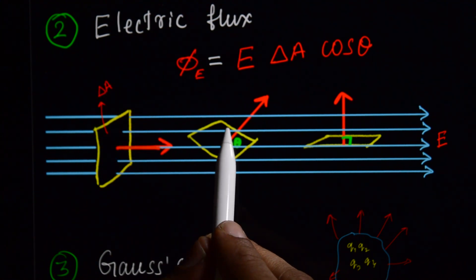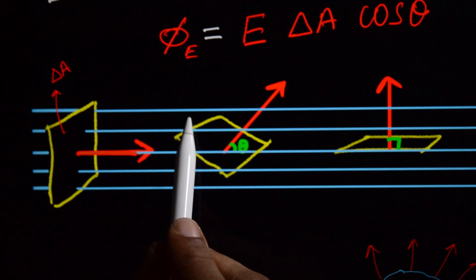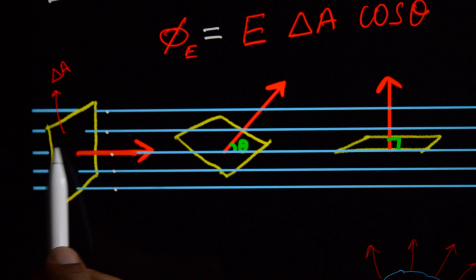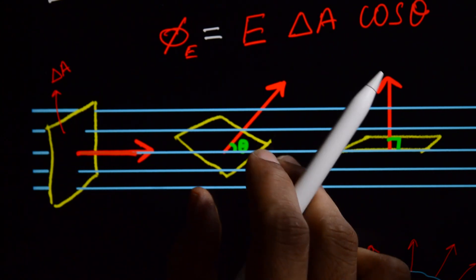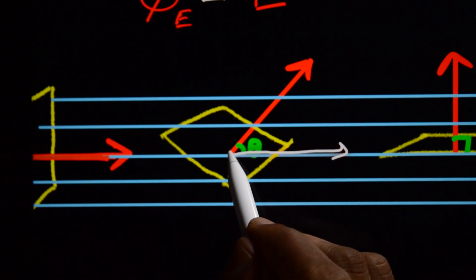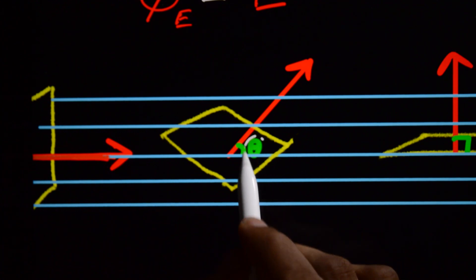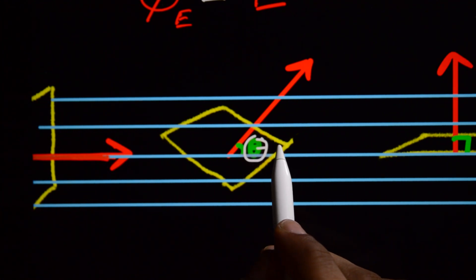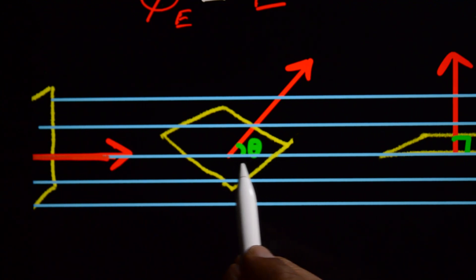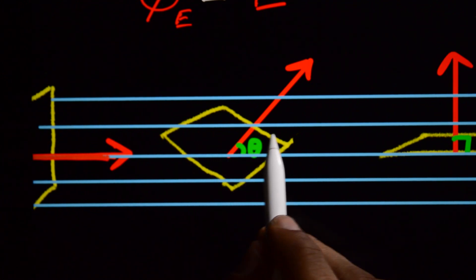Now if we tilt this frame at some angle, you can see the number of field lines passing through decreases — 1, 2, 3, 4, 5 lines pass through when you make it some angle. So now the direction of flow of water and the area vector are making some angle theta between them.